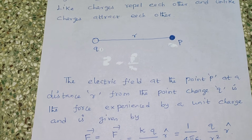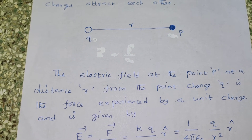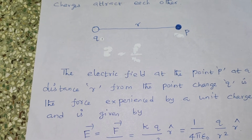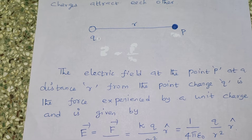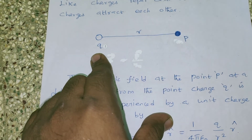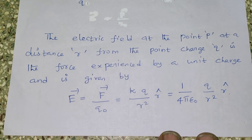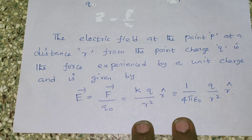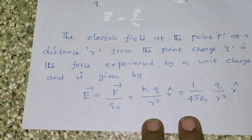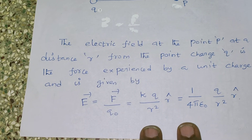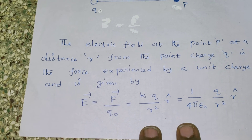The electric field at point P at a distance R from point charge Q is the force experienced by a unit charge. The electric field E-vector is defined as the force on charge q. The force is defined as k into Q by r-squared into R-cap, which equals 1 by 4π epsilon-zero into Q by r-squared into R-cap. This is the vector formula used.